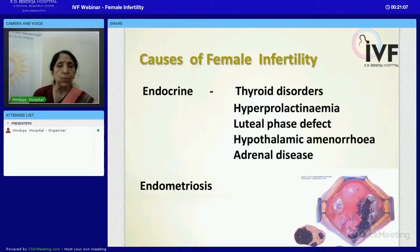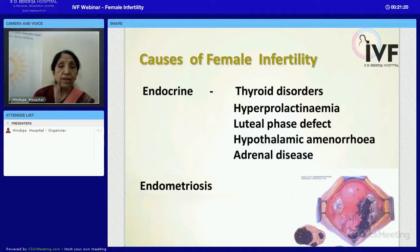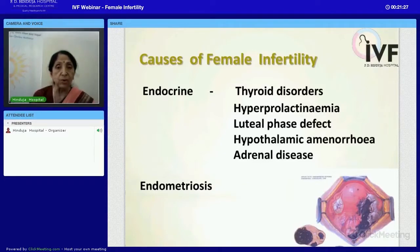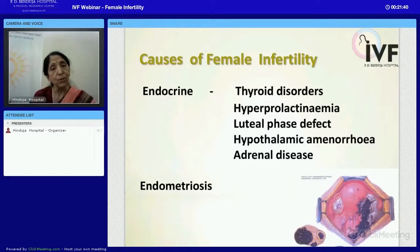Besides the ovary, certain conditions control the whole reproductive system. Thyroid abnormalities — both hyperthyroidism and hypothyroidism — or elevated prolactin from the pituitary gland, known as hyperprolactinemia, can cause hormonal imbalance within the ovary and disrupt fertility.